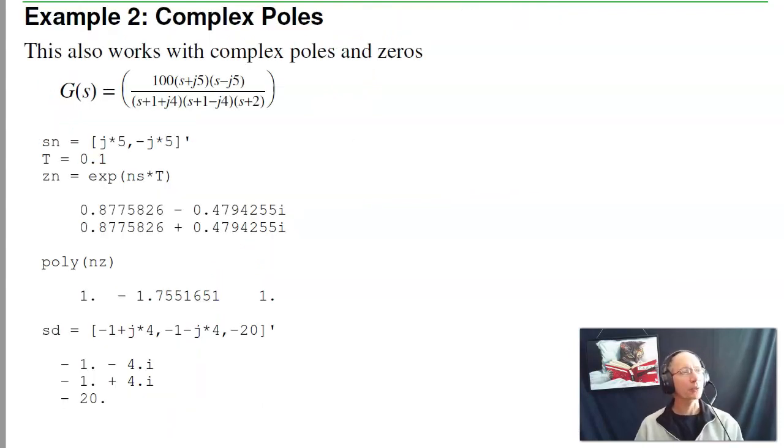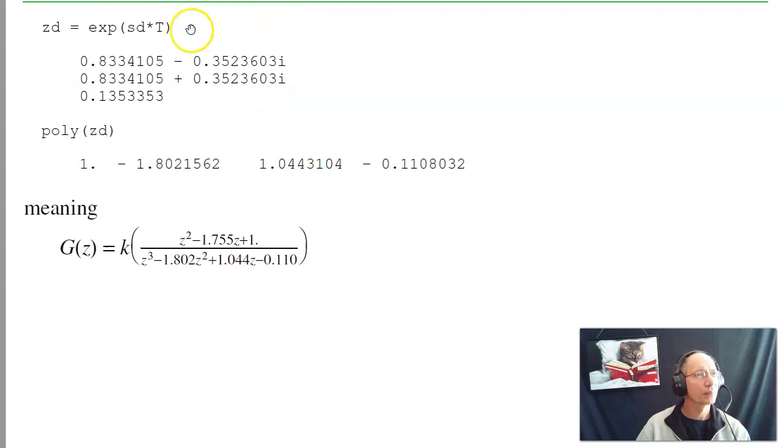This also works with complex poles. If I have complex poles and complex zeros, again, everything maps as e^(sT). So to find the zeros, I've got a zero at +j5 and -j5. Z = e^(sT). So here's where those zeros are in the Z-plane. And to multiply that out as a polynomial, that'll be z^2 - 1.75z + 1. I've got three poles in the S-plane. The three poles map to the Z-plane as e^(sT). And multiplying it out, there's the polynomial. So here's your G(z), the numerator polynomial, denominator polynomial.